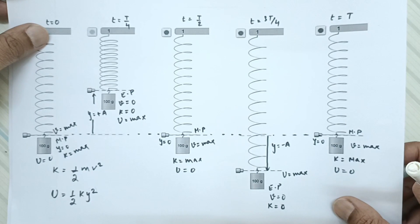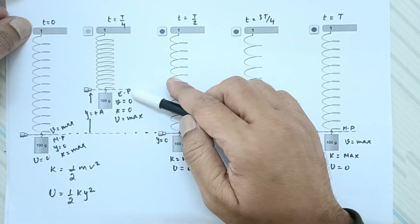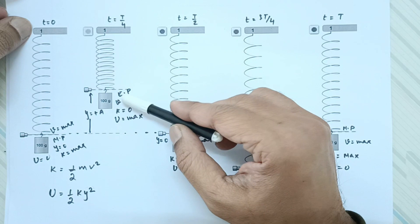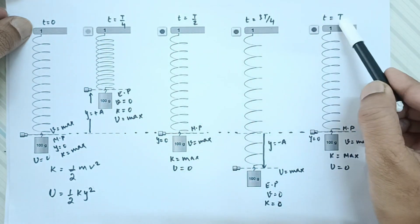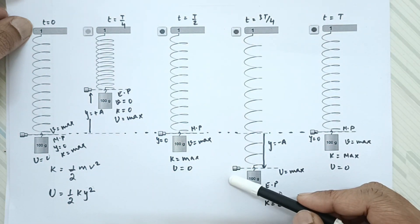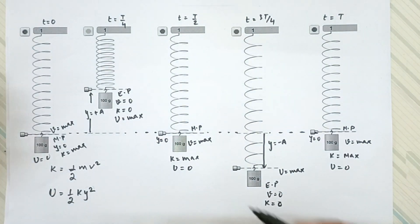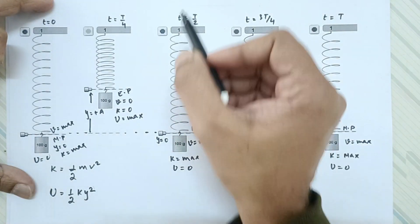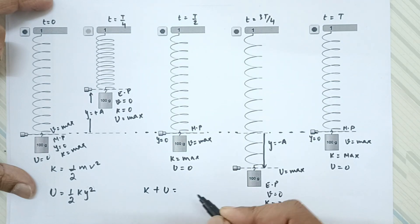To understand this, the diagram we discussed is more important — it will clear our perspective of the graphs. At these positions we know the values of kinetic energy as well as potential energy, whether maximum or minimum. Kinetic energy plus potential energy equals total energy, which is half k a square.